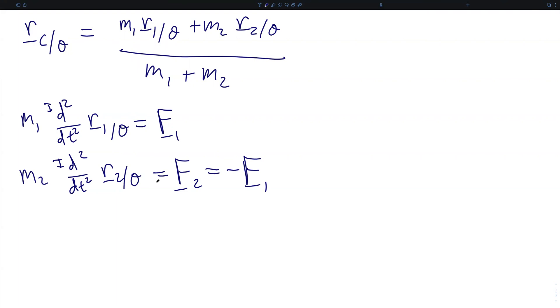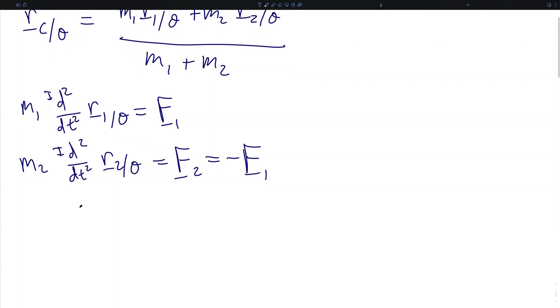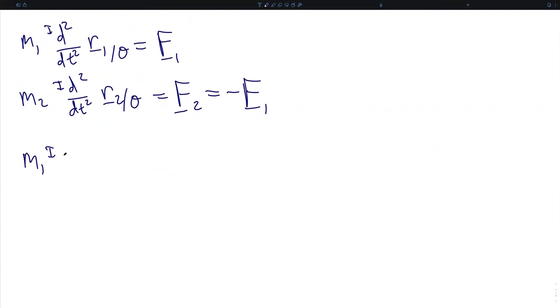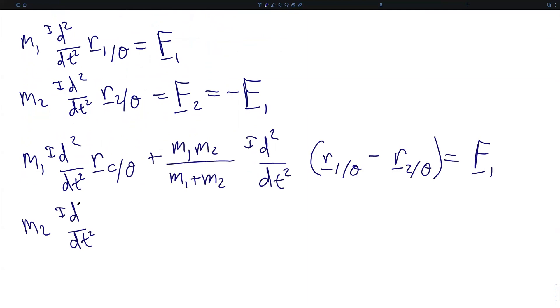We can now rewrite both these expressions in terms of the center of mass, and when we do so, we get the following pair of expressions. We have two very similar forms now as functions of the position of the center of mass and the positions of both particles with respect to point O. Via some algebraic simplification, we now have this new term M1 M2 over M1 plus M2, and we have already made the substitution of F2 being equal to negative F1.